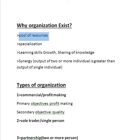For resources — whether money or time — there is synergy, where an organization can achieve more than individuals could on their own. Next is specialization: individual workers can concentrate on a limited type of activity, which allows them to build up a greater level of skill and knowledge than they would have if they attempted to be good at everything.